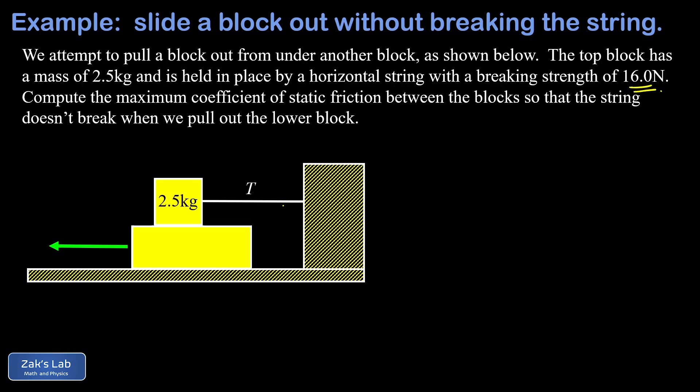You can get to before the string will snap. The question asks us for the maximum coefficient of static friction between the blocks so that the string doesn't break when we pull out the lower block. We imagine for the moment the system is completely stationary, but we're pulling on that lower block and there's a rough texture.